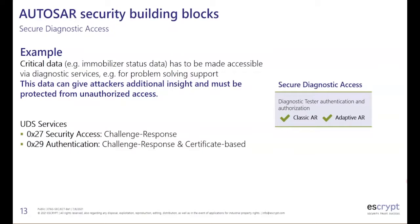The next building block is Secure Diagnostics. Assume an application managing sensitive data like an immobilizer needs some data accessible via the diagnostic interface to solve problems, but that data might give additional insight to an attacker. AUTOSAR addresses this with two UDS services: Service 0x27 (Security Access) using a challenge-response protocol, and Service 0x29 which supports both challenge-response and certificate-based authentication. This functionality is available in both Classic and Adaptive AUTOSAR.